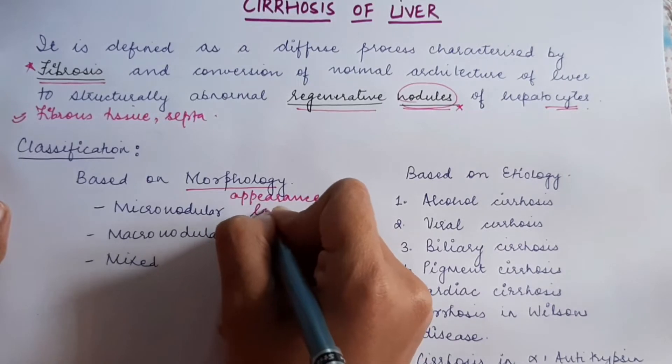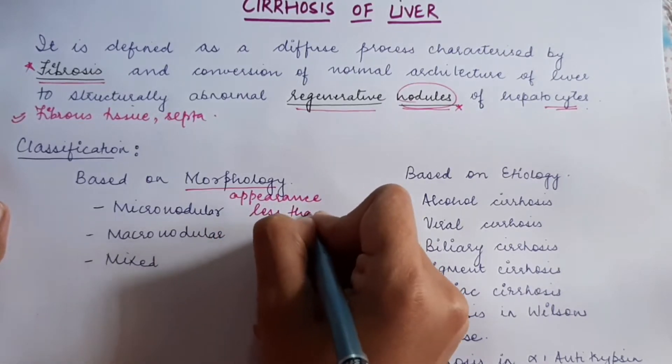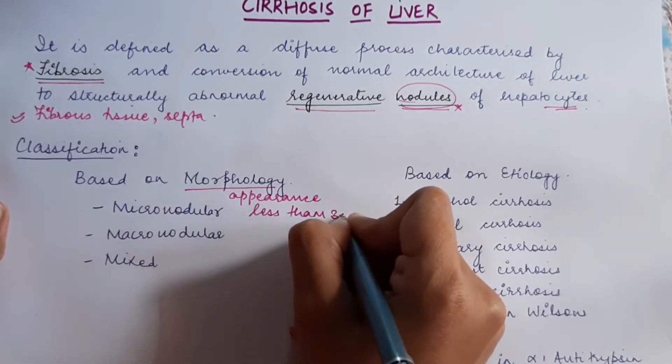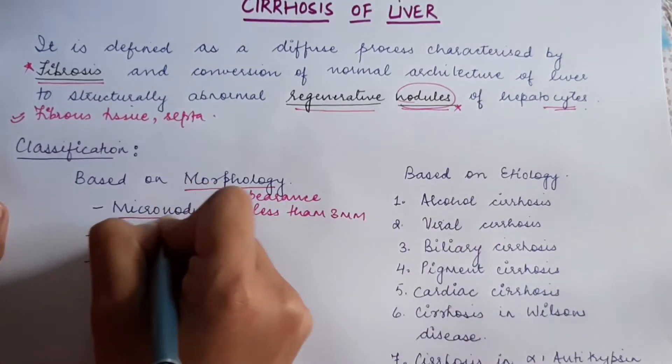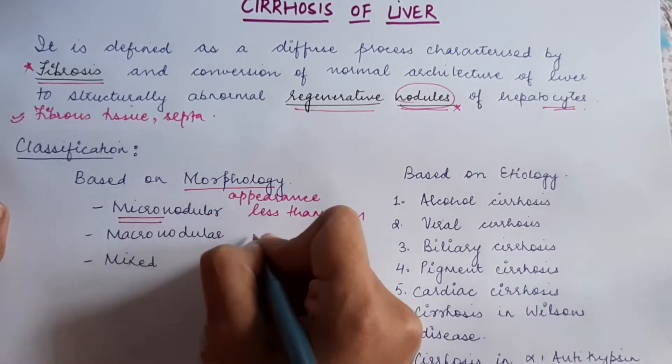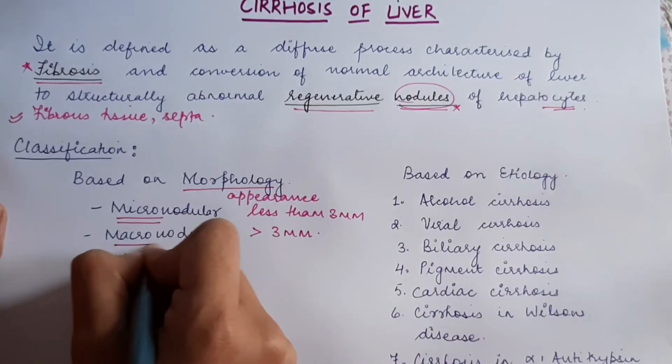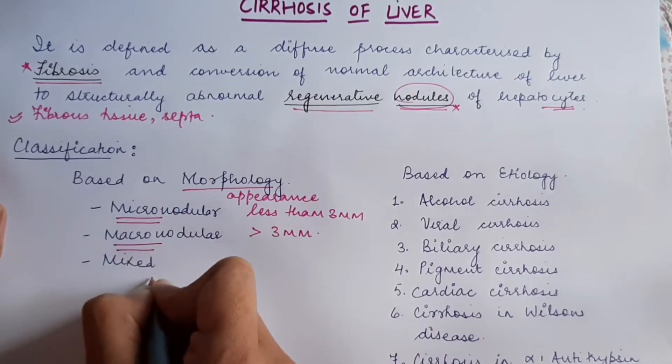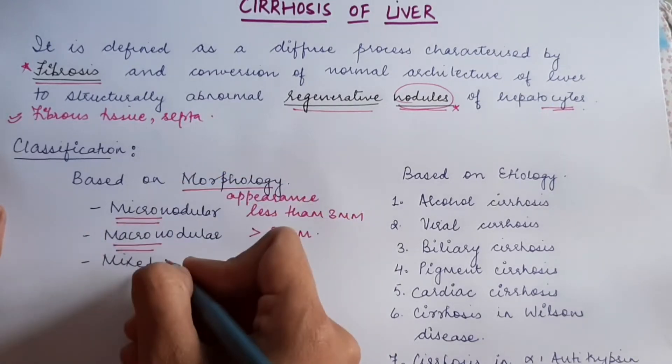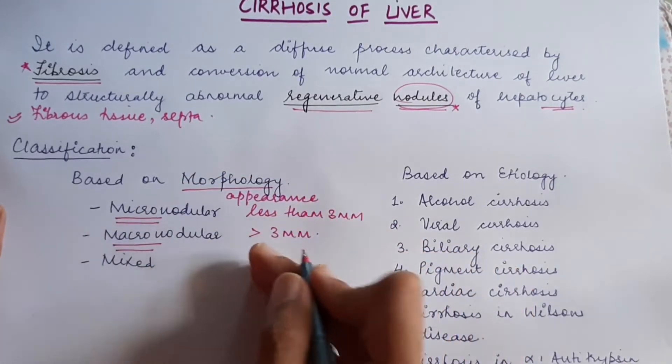When the size is less than 3 mm, it is known as micronodular. When the size is more than 3 mm, it is known as macronodular. And in the mixed variety, we will see both kinds of nodules, micro as well as macro.